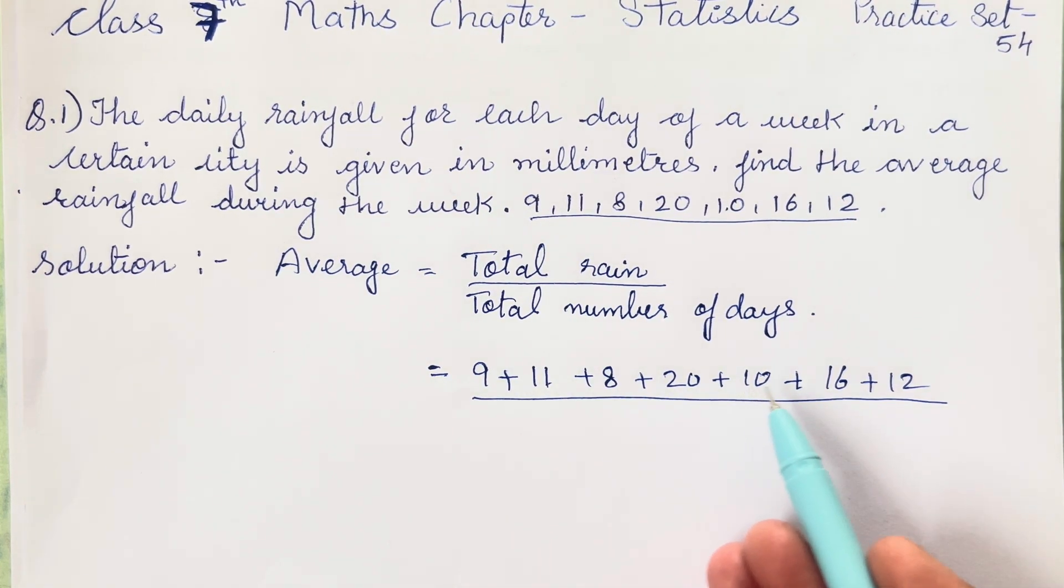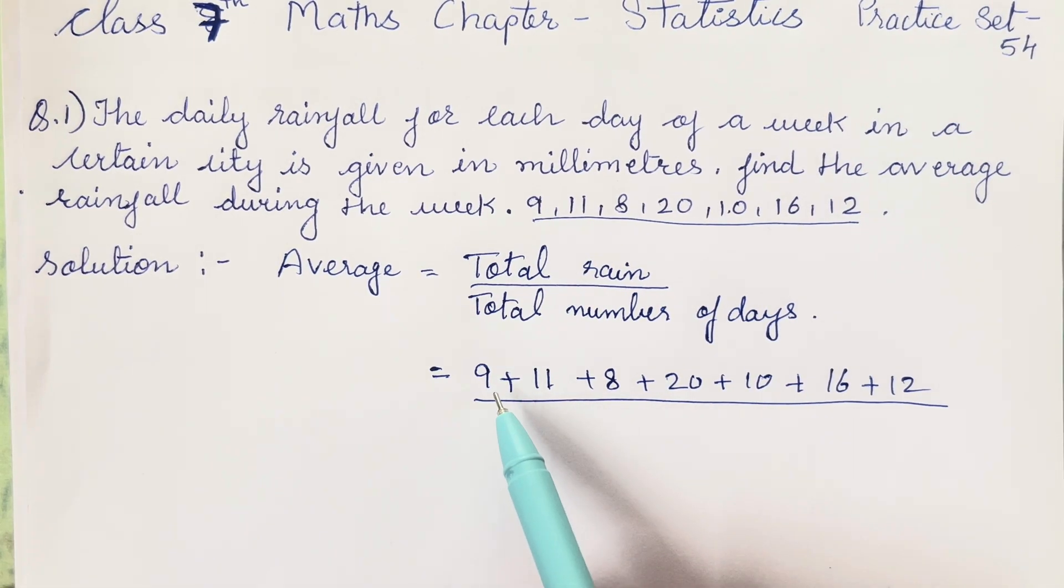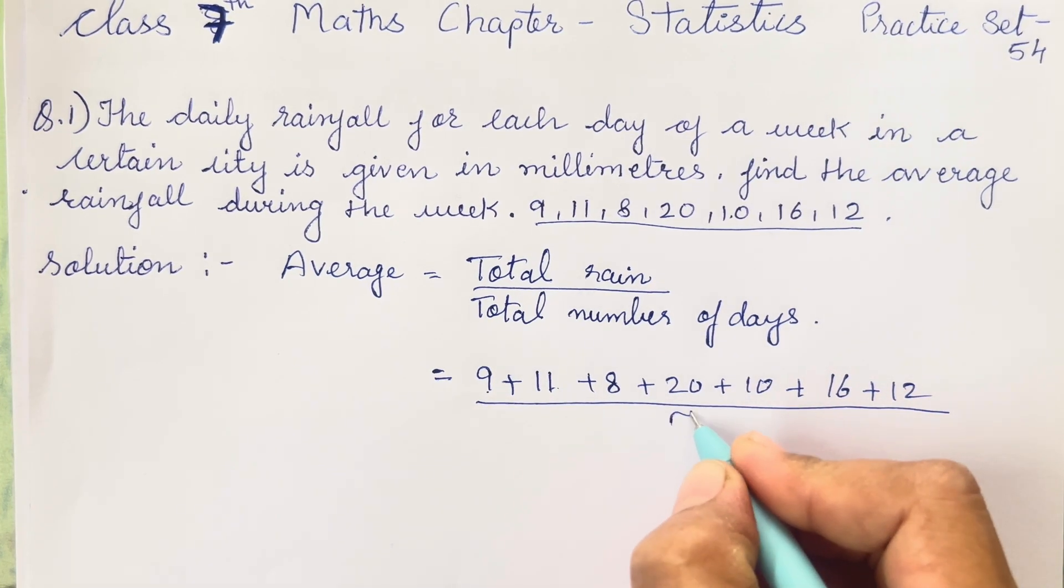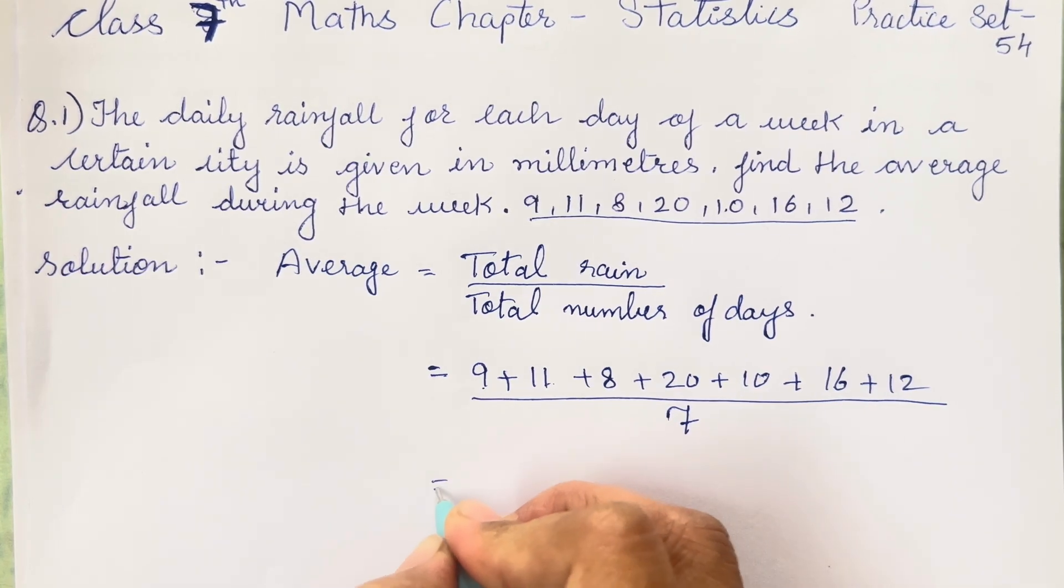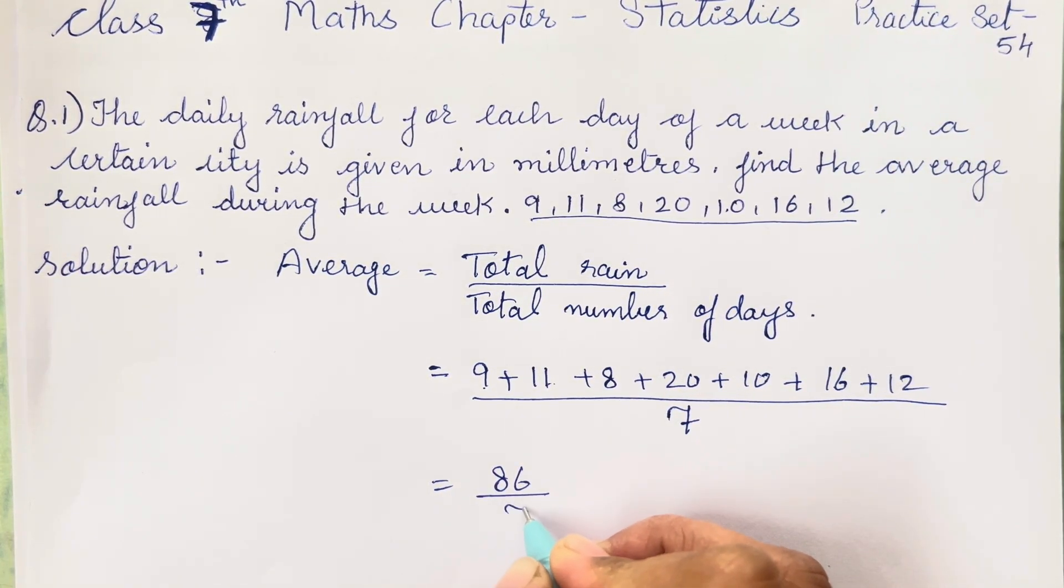You can arrange it in a vertical order and then you can add it. If you are able to add it orally you can add it orally also. So how many numbers are going to be there? 1, 2, 3, 4, 5, 6 and 7. So write 7 over here. When you add all this the total is supposed to be 86 upon 7.